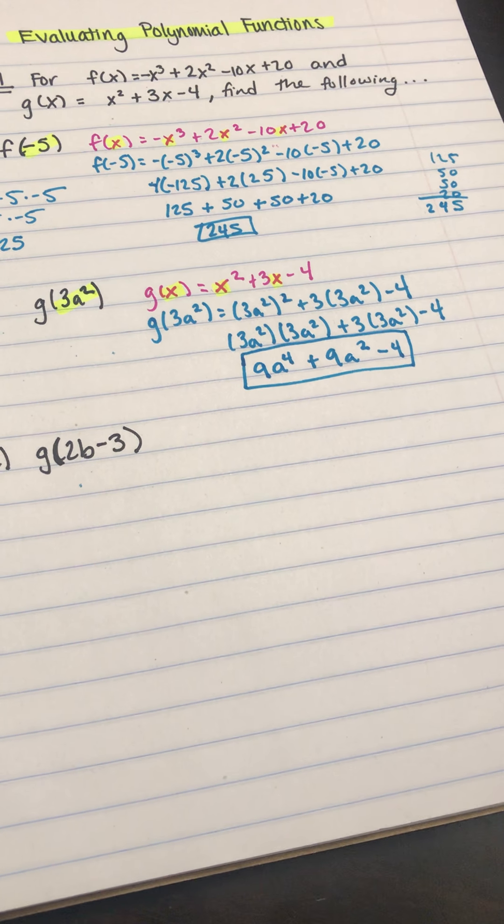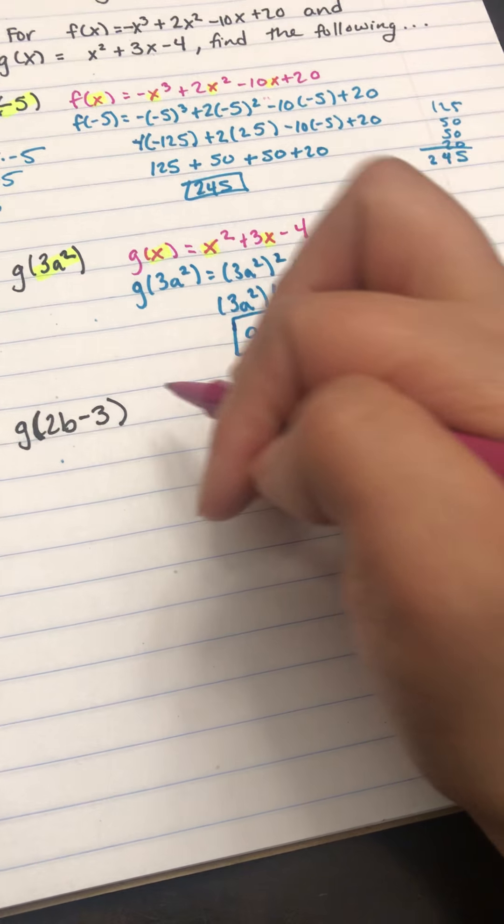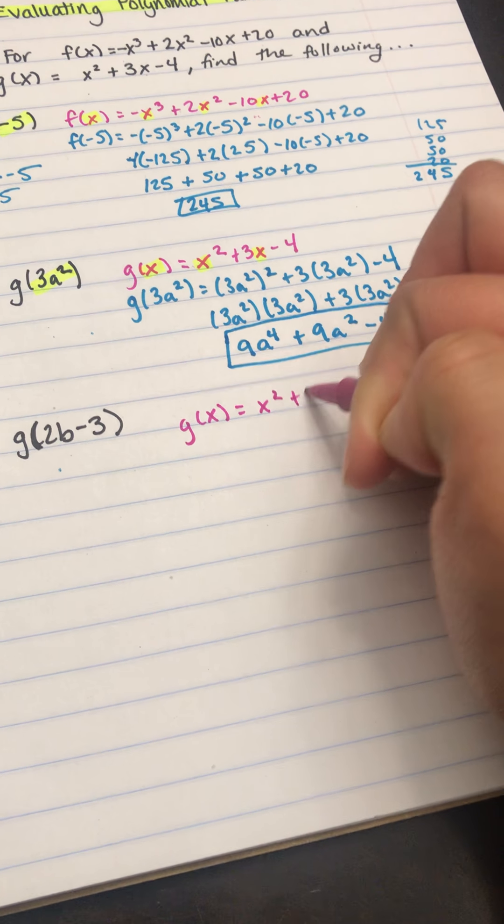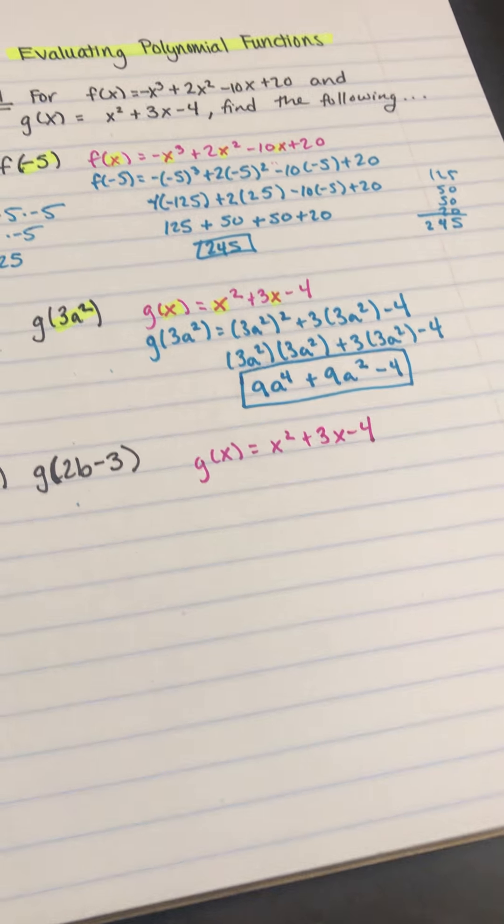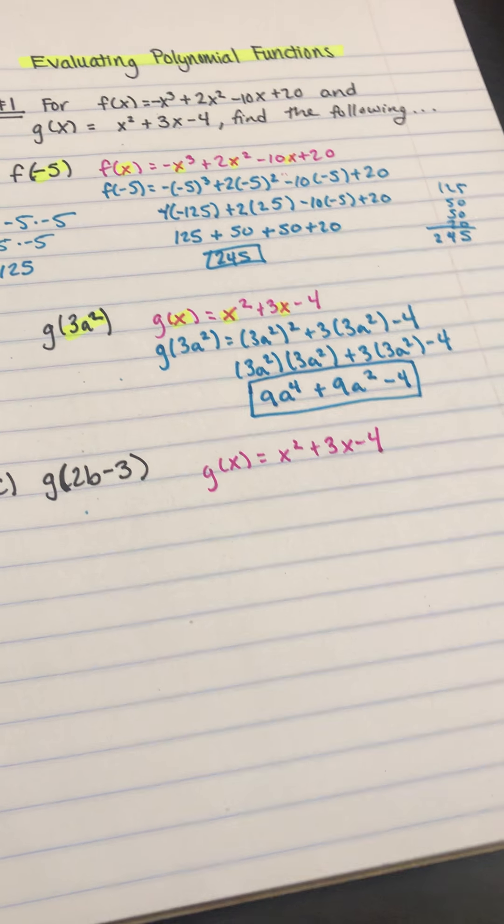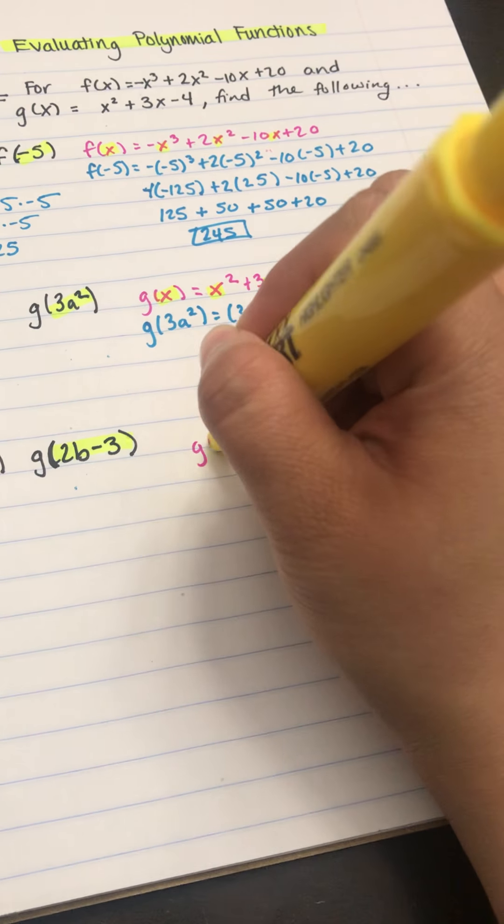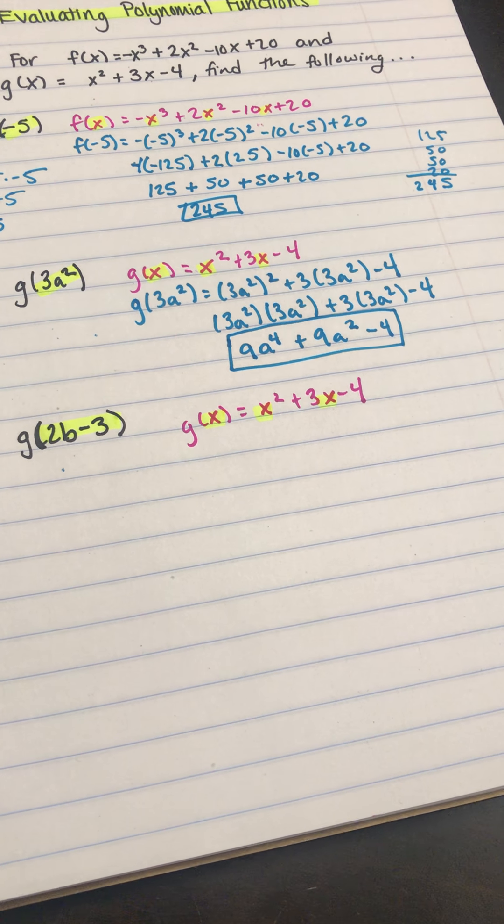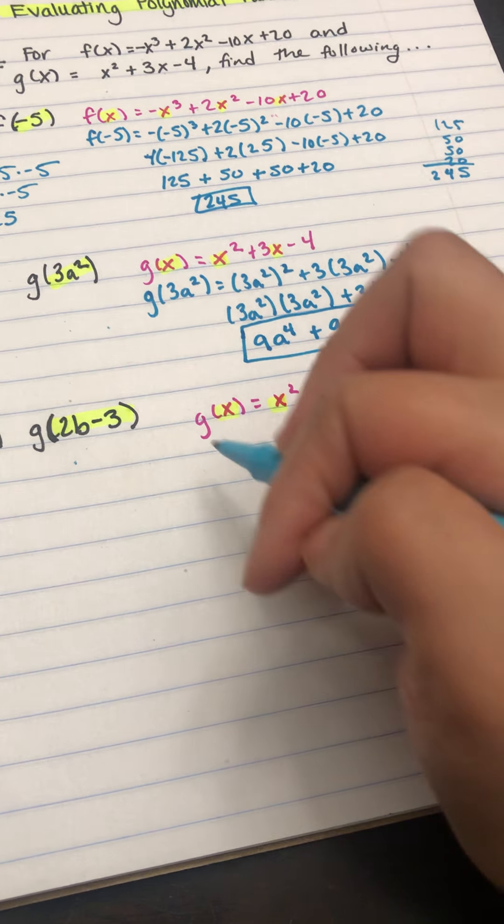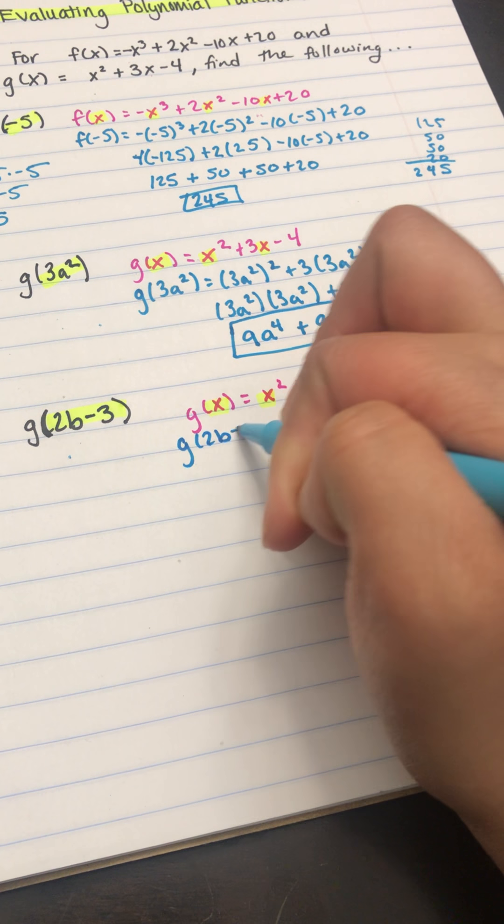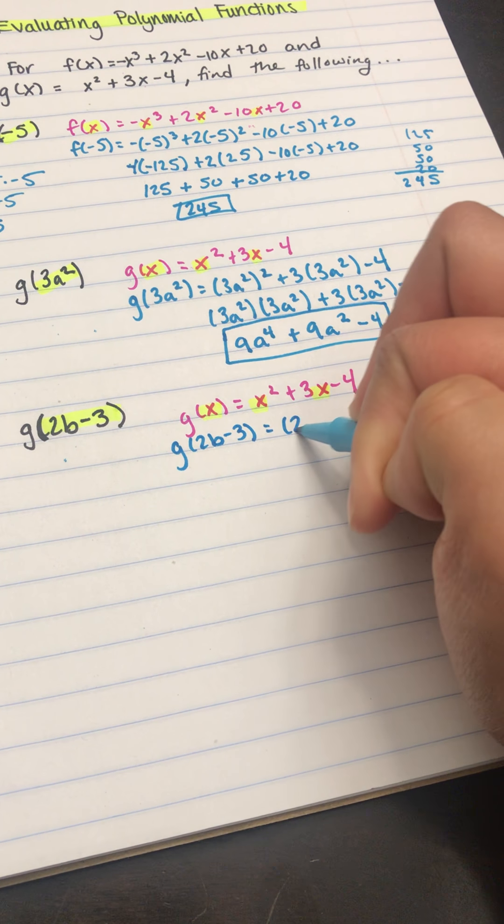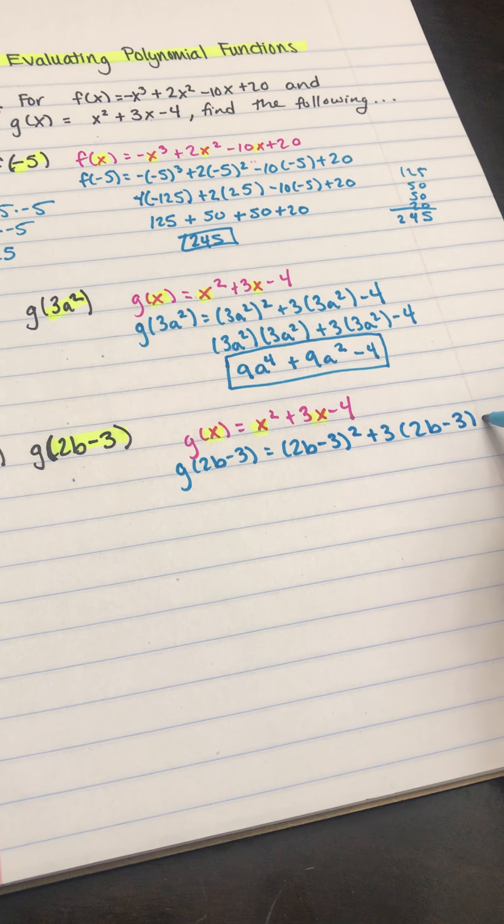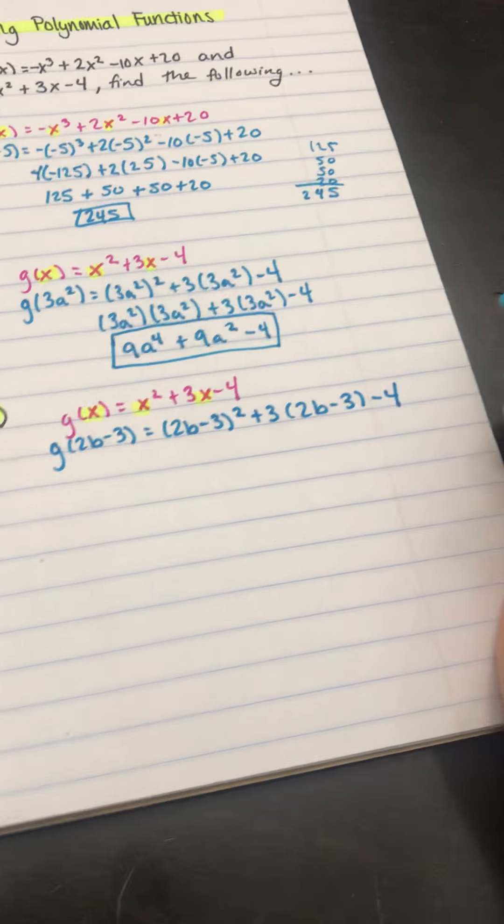And then on this final problem here, we're still going to use g of x. So I'm going to write g of x again, which is x squared plus 3x minus 4. But this time, we're going to plug in 2b minus 3. So everywhere I see an x, I'm going to plug in 2b minus 3.